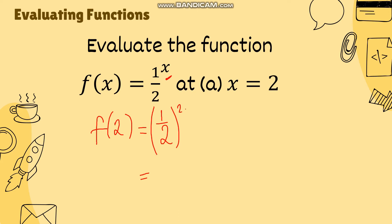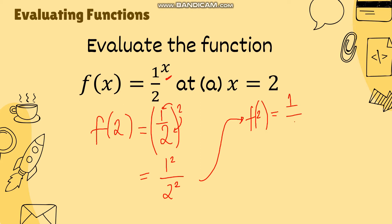Now if a fraction is raised to a certain power, all we have to do is distribute the exponent to the numerator and to the denominator. So this is just 1 squared over 2 squared. Simplifying, f(2) is equal to 1/4. So if the value of x is 2, the function is equal to 1/4.